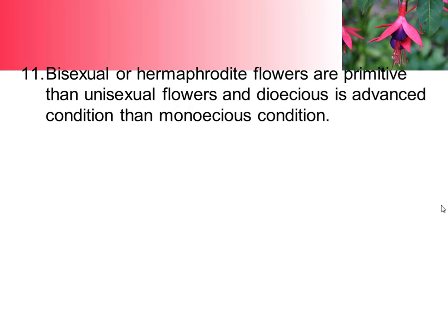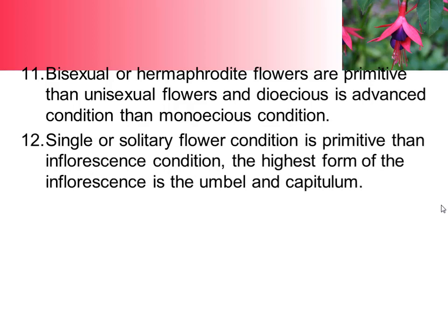Unisexual flowers and dioecy are an advanced condition compared to monoecy, meaning reduction in flower parts represents advancement. Whenever reduction occurs in flower parts, progressive evolution has occurred. Single or solitary flower condition is more primitive than the inflorescence condition. The highest forms of inflorescence are the umbel and capitulum, which are the most advanced characteristics.